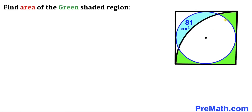In this video we have a whole circle along with a quarter circle inscribed in a square, such that the area of the blue shaded region is 81 centimeters square. Moreover, all sides of the square are tangent to the whole circle. We are going to calculate the area of the green shaded region.